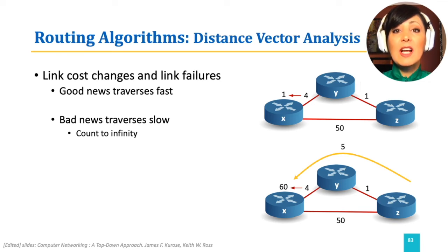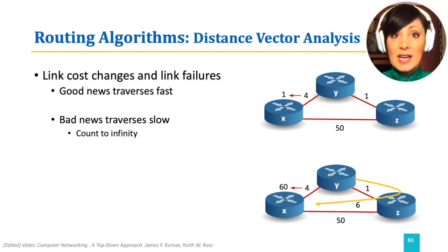Therefore, it updates its forwarding table to include that for reaching node X, it needs to go through node Z. And the cost is 6, which is 1, the cost of link to Z, plus the cost of reaching X from Z, which was 5.